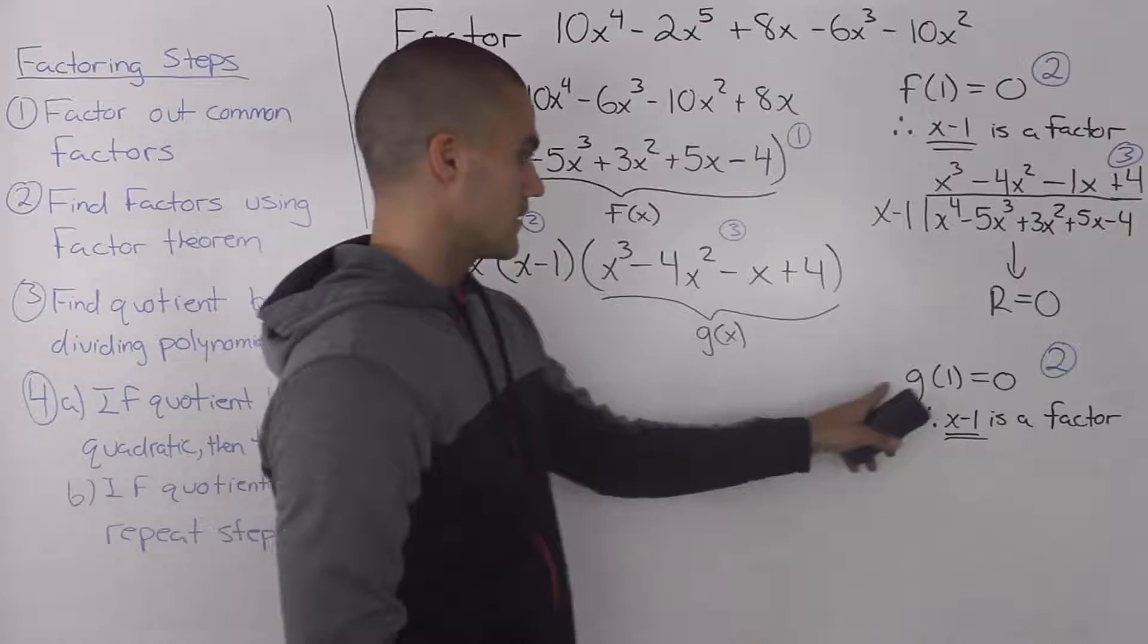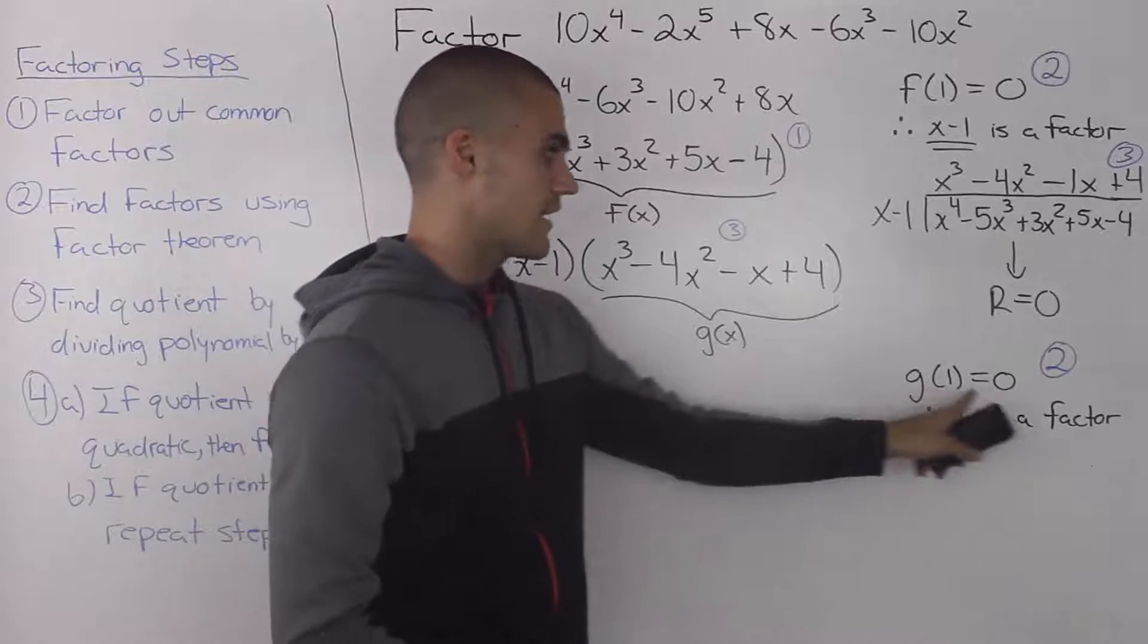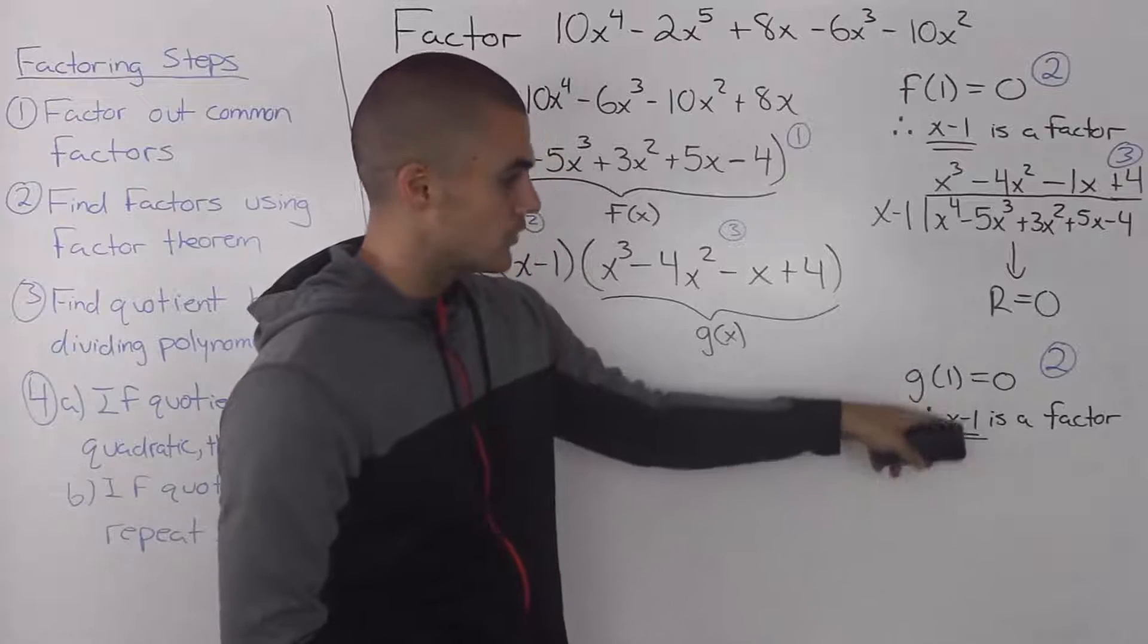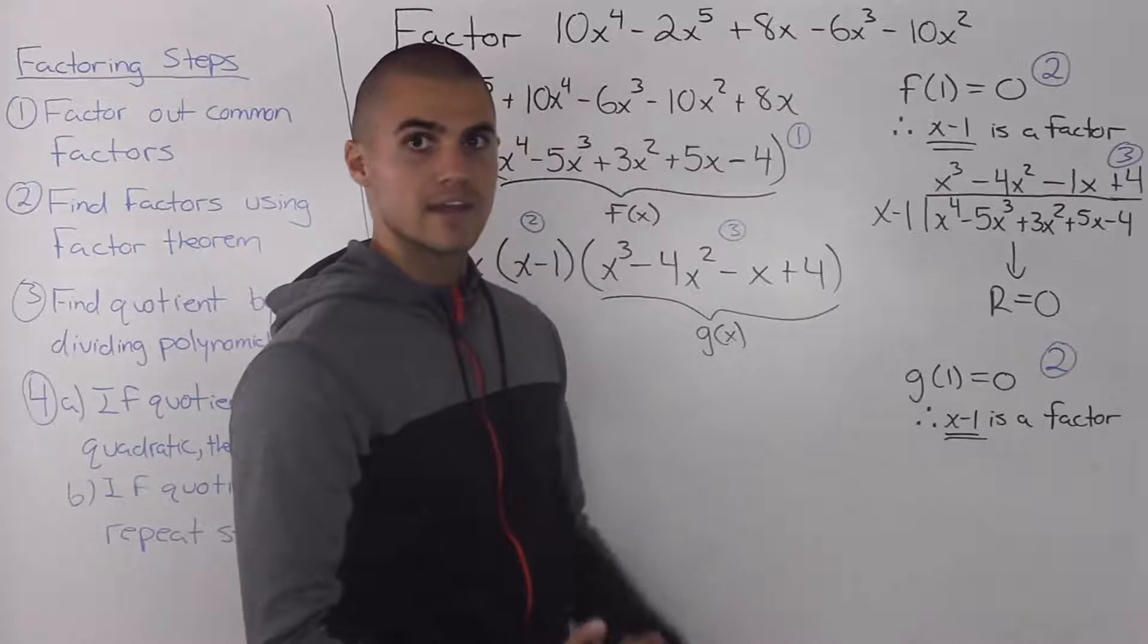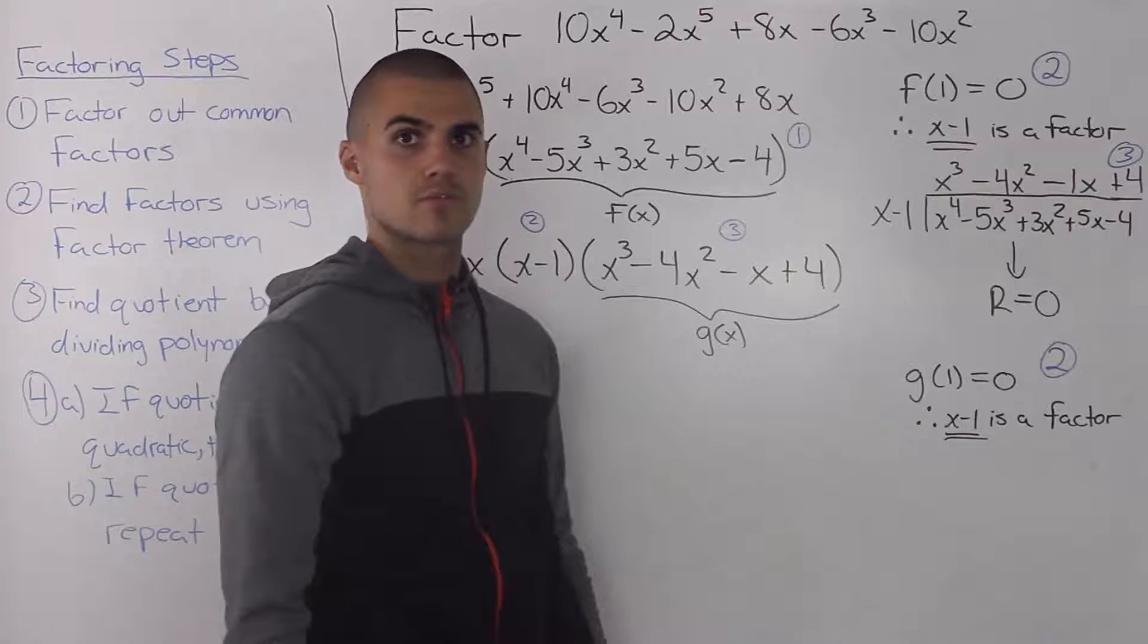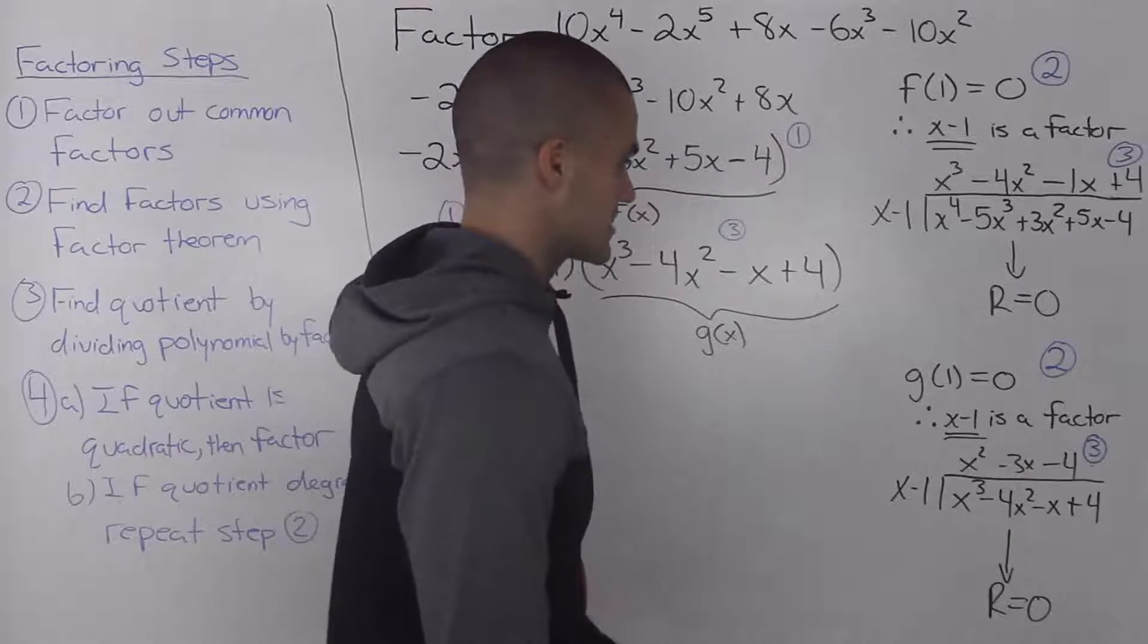And then if we plug in 1 for the x values of g of x, we get a value of 0. So we know that x minus that k value of 1, or x minus 1, is a factor of g of x and we can move on to step 3.